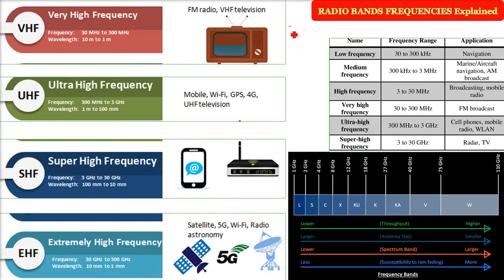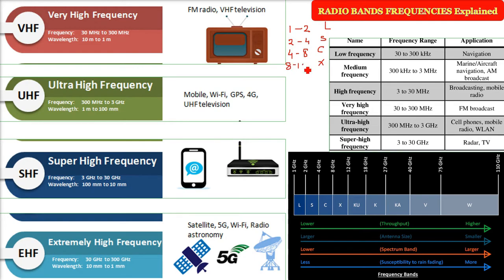Starting with 1 to 2 gigahertz, this is the L band. Then 2 to 4 gigahertz is the S band. From 4 to 8 gigahertz is the C band. Then 8 to 12 gigahertz is the X band. From 12 to 18 gigahertz is the Ku band — K under. Then K band is 18 to 27 gigahertz, and Ka band — K above — follows above that.